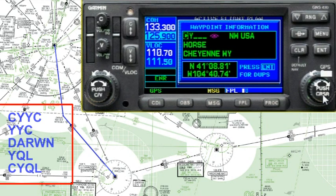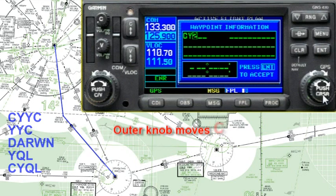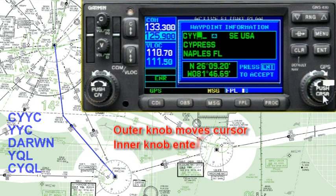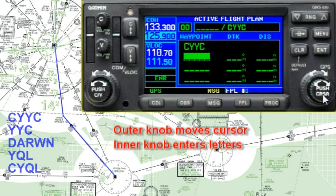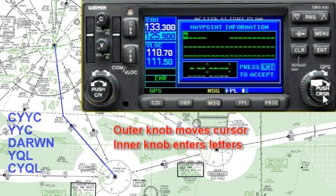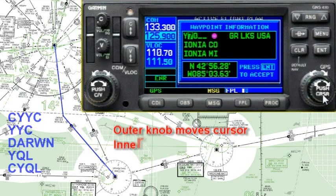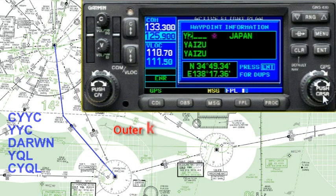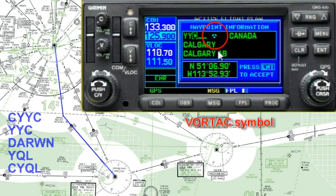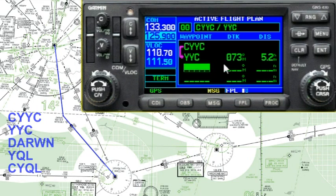Turn the cursor on and start entering the required waypoints — you can see the list of waypoints on the video. Put in CYYC first, then YYC. As we put the second waypoint in, pause and make sure we're getting what we're going for — we've got Calgary and the latitude and longitude we can check. More importantly, as we enter it, check the bearing and distance to confirm they seem correct.